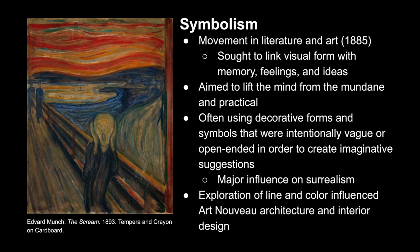In 1885, we see the emergence of Symbolism, which was a movement in both literature and the arts. Thematically, it aimed to lift the mind of the viewer from the mundane to the practical, and it often utilized decorative forms and symbols that were intentionally vague or open-ended, creating imaginative suggestions from which the viewer could deduce their own meaning. As a result, Symbolism had a major influence on Surrealism, and its exploration of both line and color had major influence on Art Nouveau architecture and interior design.